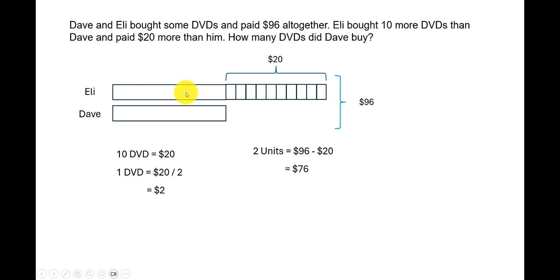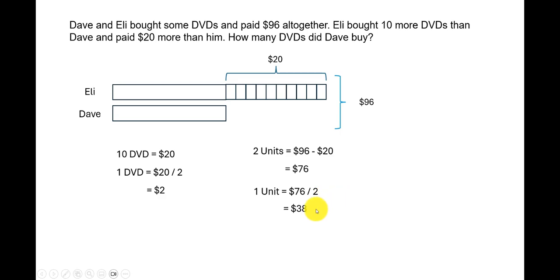Since we know these two units are equal to $76 and they are of equal sizes, one unit is equal to 76 divided by 2, which is $38. That shows us that Eli spent $38 plus an additional $20, and Dave spent $38.